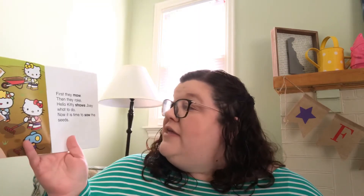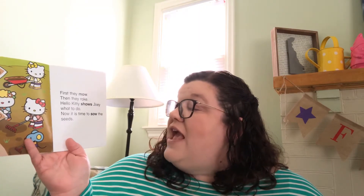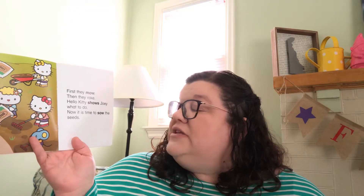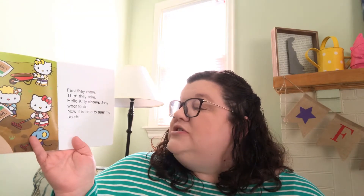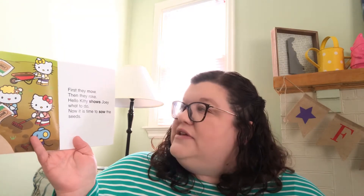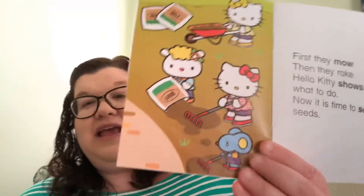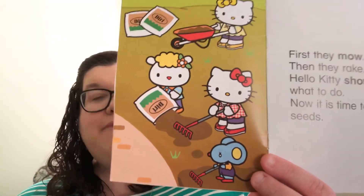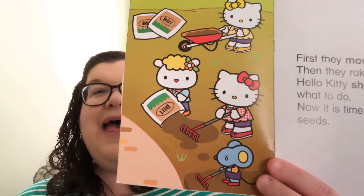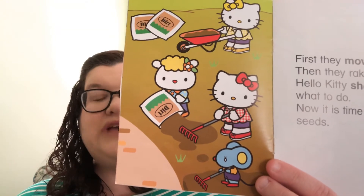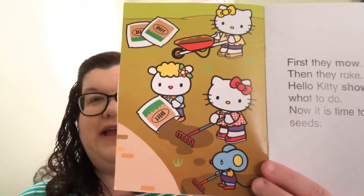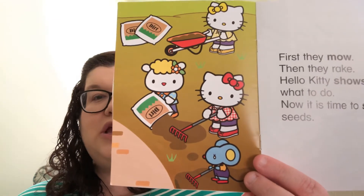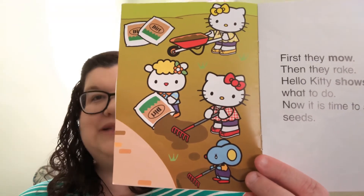First they mow, then they rake. Hello Kitty shows Joe what to do. Now it's time to sow the seeds. So they've got to get the ground ready — first they mow, then they rake, then they sow the seeds, which means they plant the seeds. Look at all of them working hard to plant a garden.